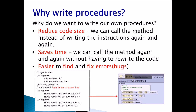We learned how to create a hop biped procedure and a flap ears White Rabbit procedure. Now that we know how to create and call a procedure, why do we want to write our own procedures? Most importantly, it reduces the code size. We can call the method instead of writing instructions again and again — if I need hop five times, I just call hop five times. It saves time, and it's easier to find and fix errors. If my rabbit's ears are not flapping correctly, I know to go to the flap ears procedure. If my White Rabbit is not hopping correctly, I go to the hop procedure and find the error there.